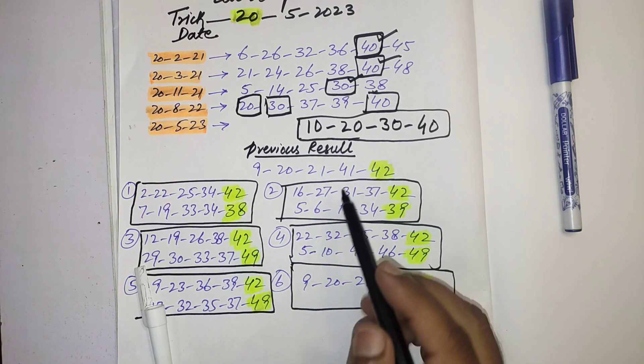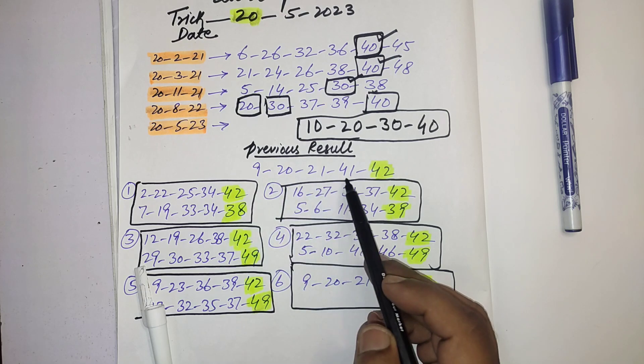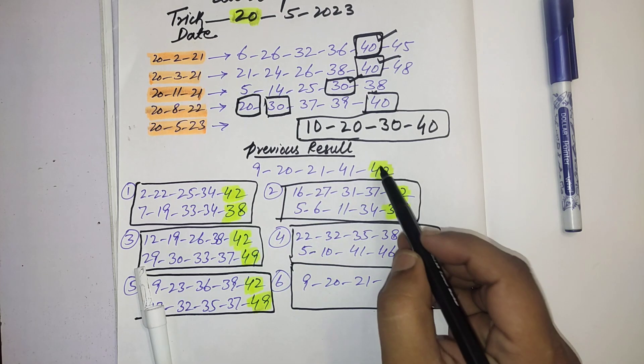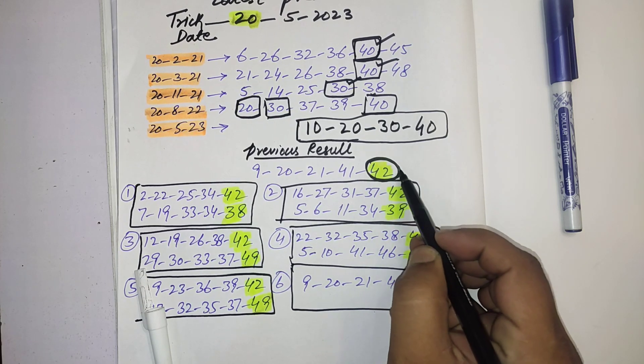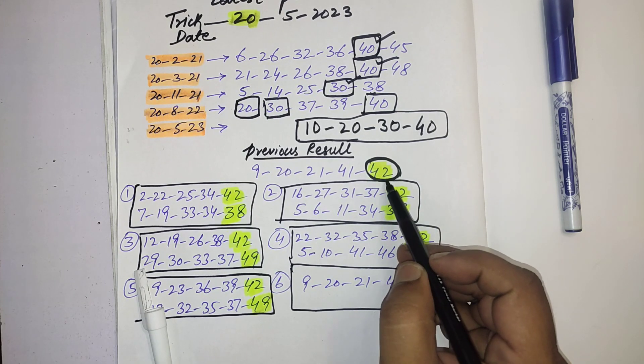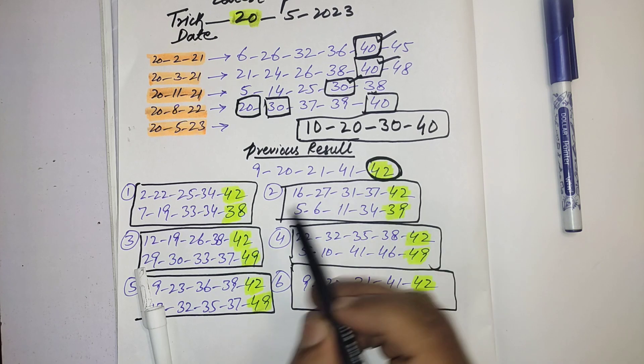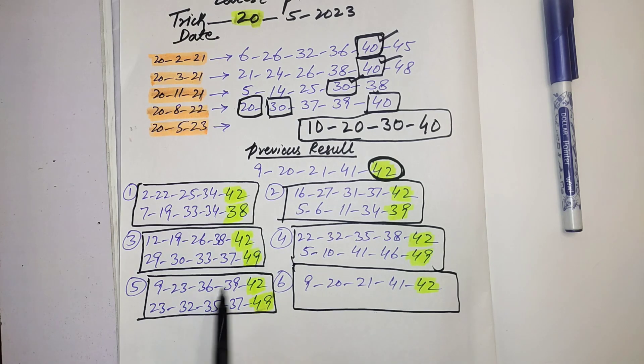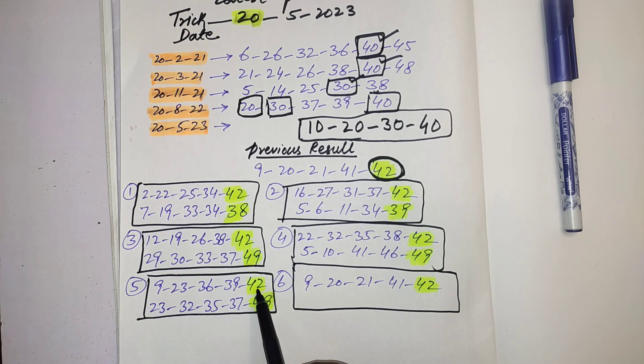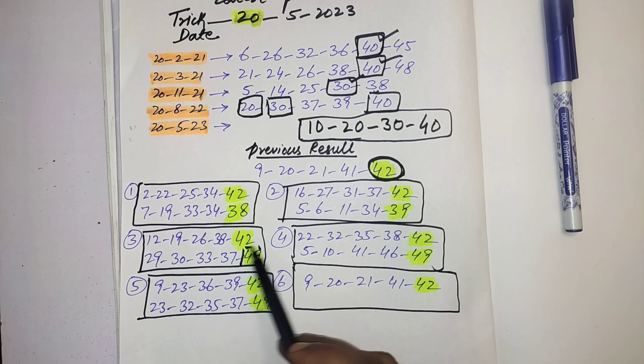Second thing is, you can see here this is the previous result: 9, 20, 21, 41, and 42. Whenever this number in latest previous result in Mahzooz, 42 was game, after that they picked mostly three times. You can see here when 42 was game, three times they picked 49.